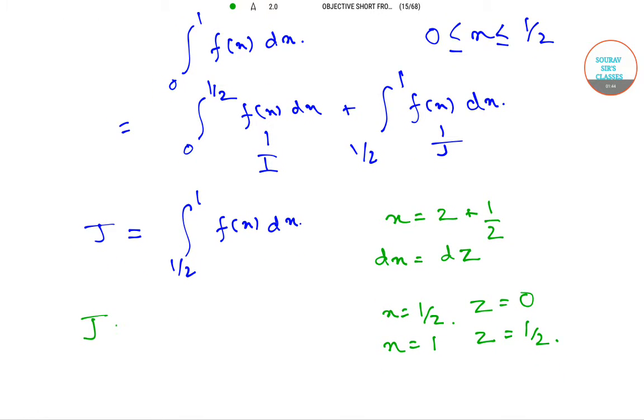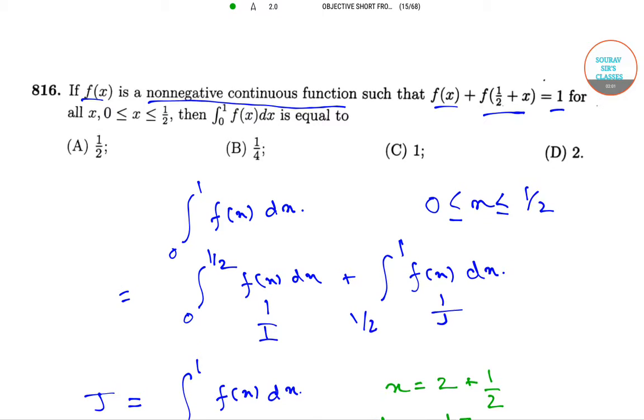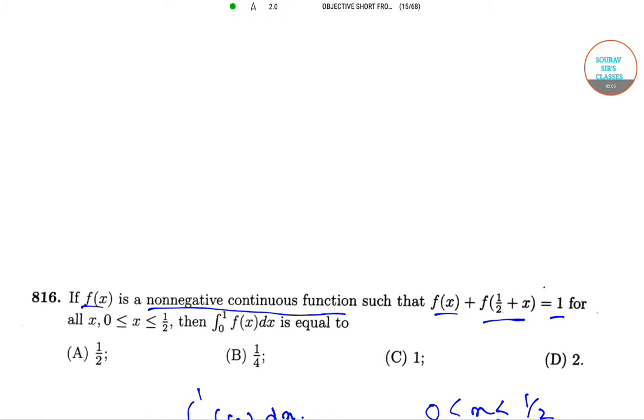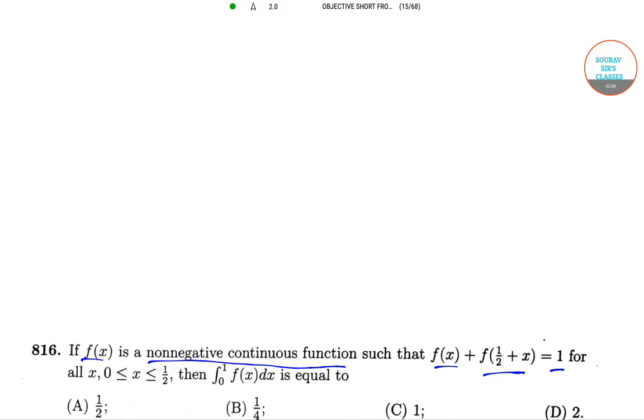So then we can write J as integration 0 to 1/2 f(z + 1/2) dz. From our question we know the relation f(x) + f(1/2 + x) equals 1. So we have J equals integration 0 to 1/2 (1 - f(z)) dz, which equals 1/2 minus integration 0 to 1/2 f(z) dz, which is nothing but our I.